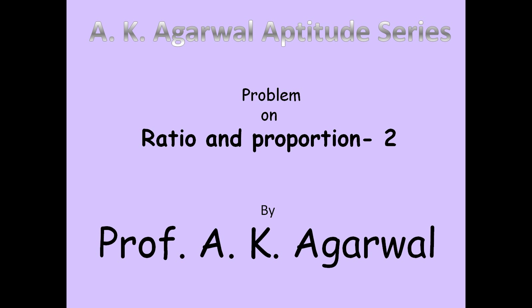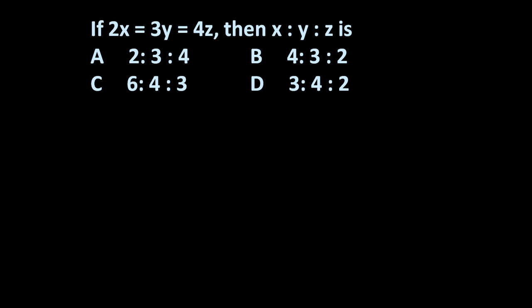Hello friends and welcome to AK Agrawal aptitude series. In this session we are going to learn a technique for solving a problem on ratio and proportion. Here the given problem is: if 2x = 3y = 4z, then x : y : z is? We have to find out the correct option out of these four options given.